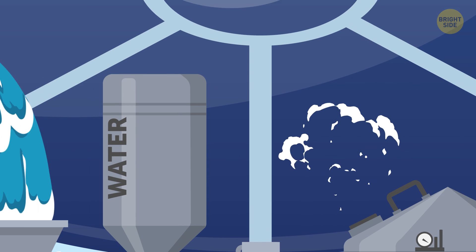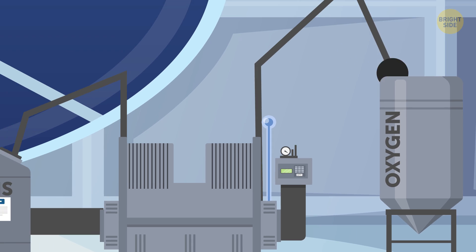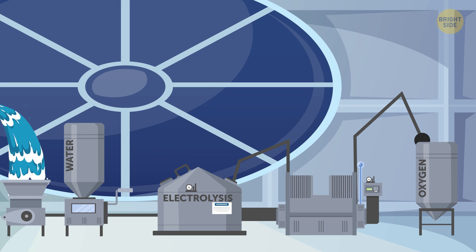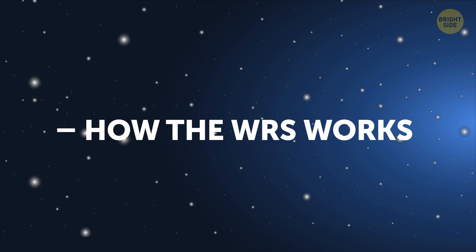But with the invention of the Onboard Water Treatment System, everything has become much simpler. And with the help of a process called electrolysis, they've learned how to extract the necessary reserves of oxygen from the water itself. But more on that here in a bit. For now, let's see how the WRS works.